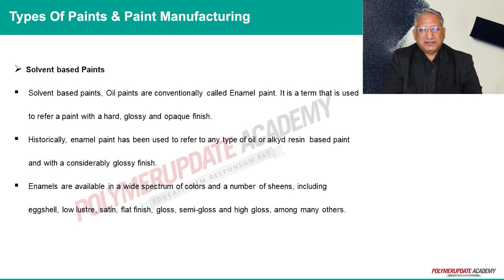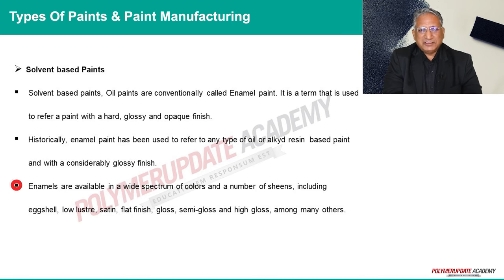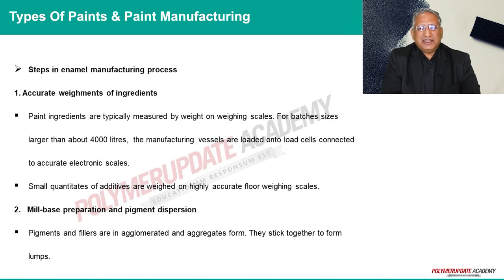Solvent-based paints: oil paints are conventionally called enamel paint — a term used to refer to a paint with a hard, glossy, and opaque finish. Historically, enamel paint has been used to refer to any type of oil or alkyd resin-based paint with a considerable glossy finish. Enamels are available in a wide spectrum of colors and a number of sheens, including eggshell, low luster, satin, flat finish, gloss, semi-gloss, and high gloss.